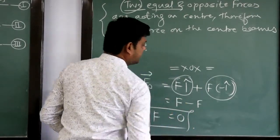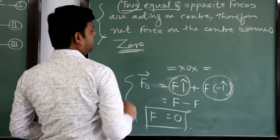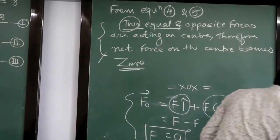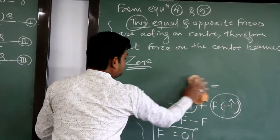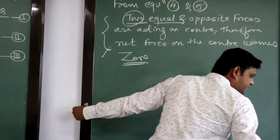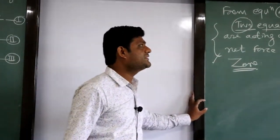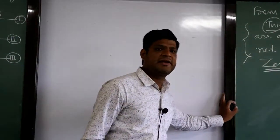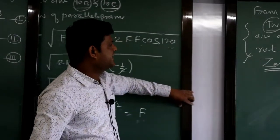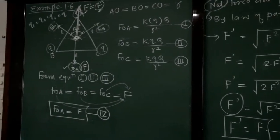The force acting on the center is zero — this can also be written mathematically. In this way we calculated the force acting on the center when charges are kept on the vertices of the equilateral triangle. You can take a screenshot of this numerical.